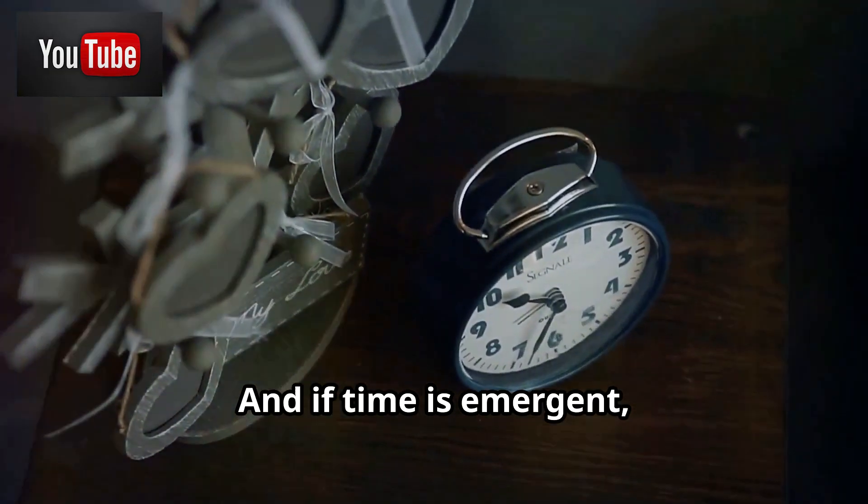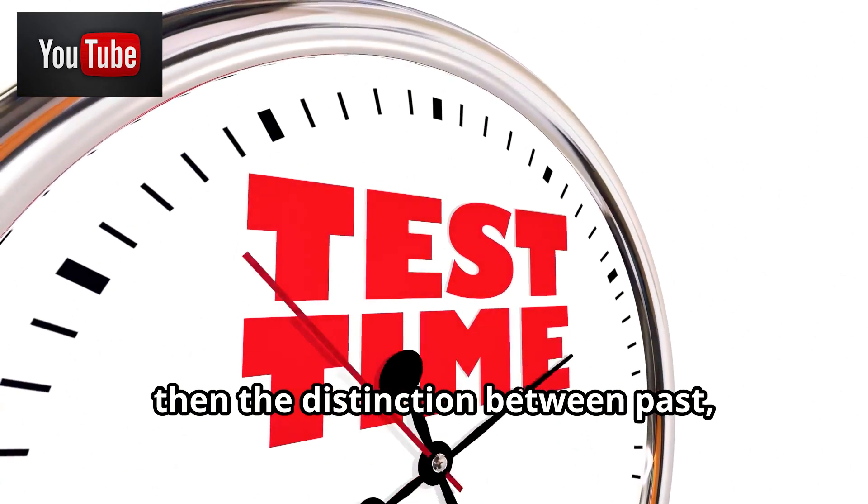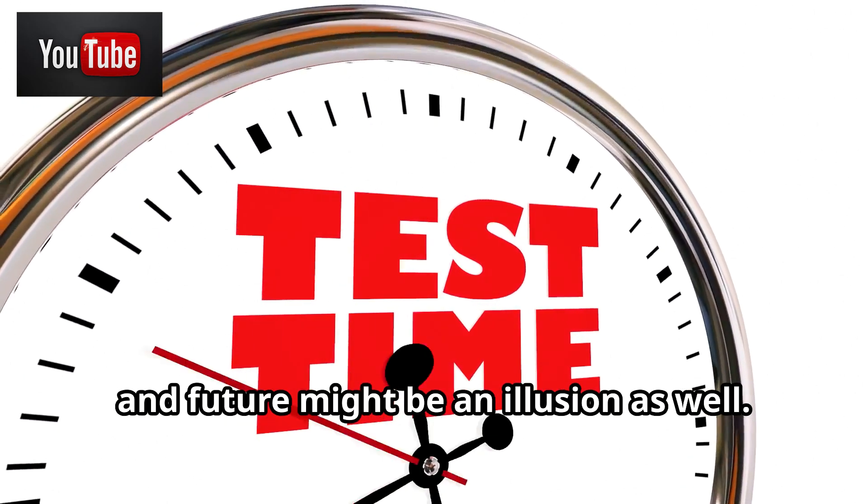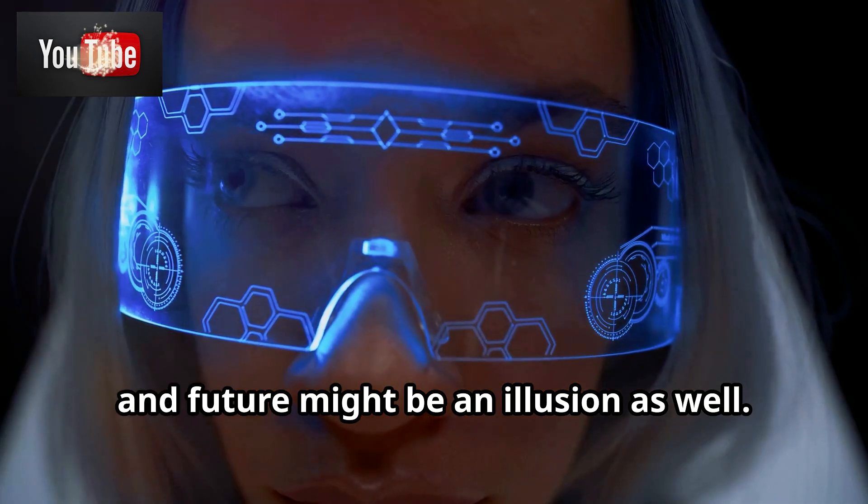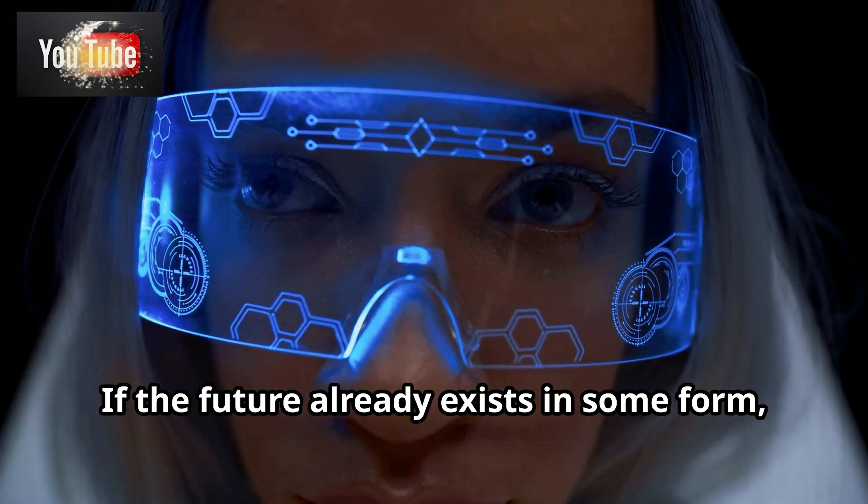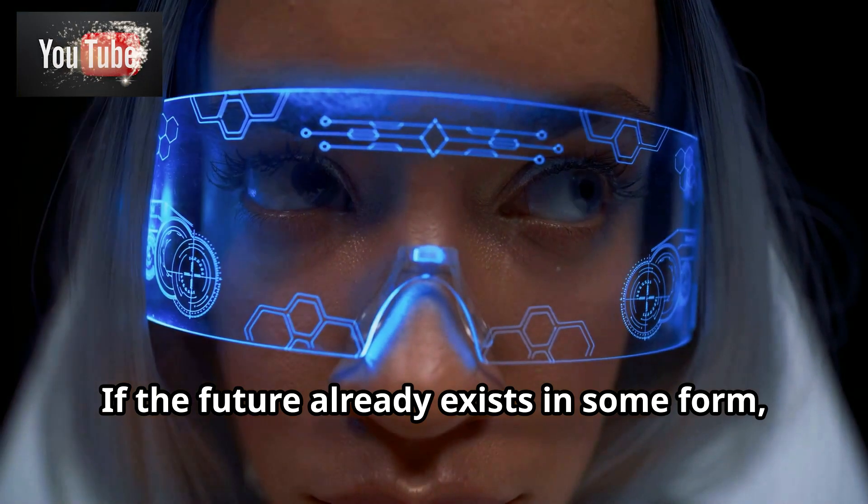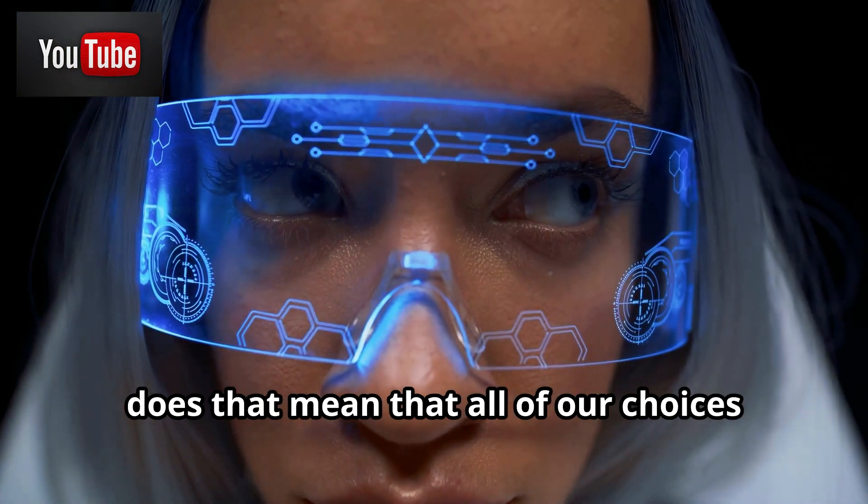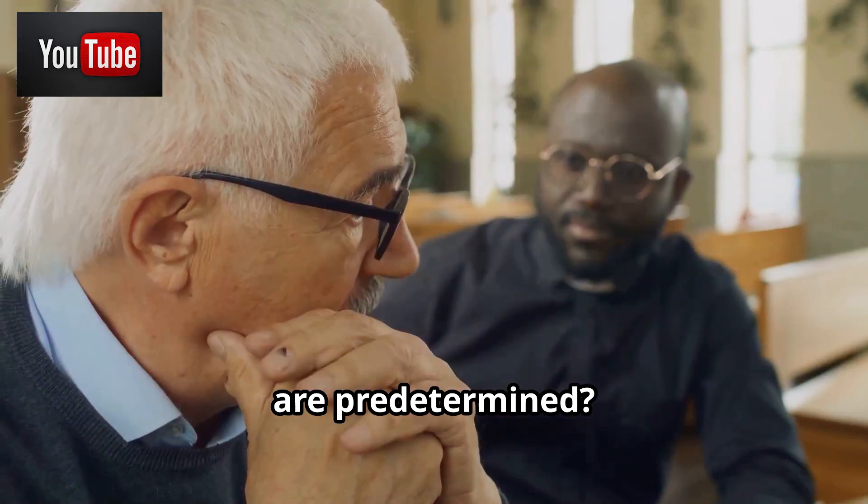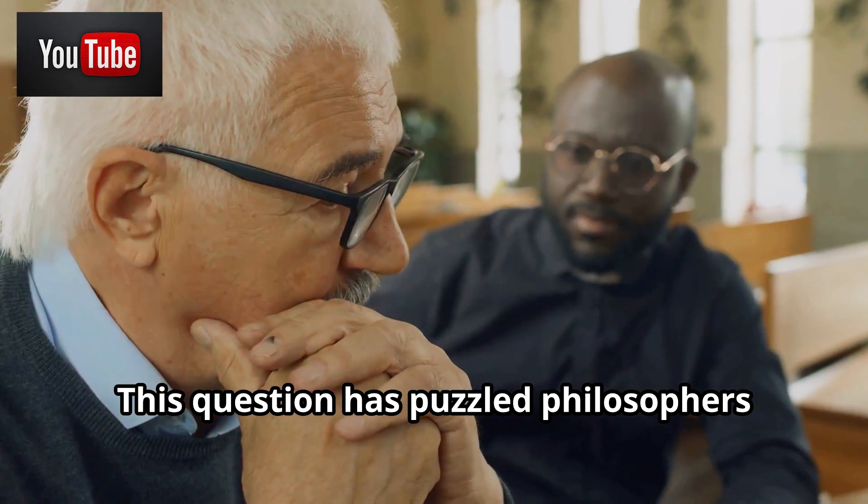And if time is emergent, then the distinction between past, present, and future might be an illusion as well. But what about free will? If the future already exists in some form, does that mean that all of our choices are predetermined? This question has puzzled philosophers for centuries.